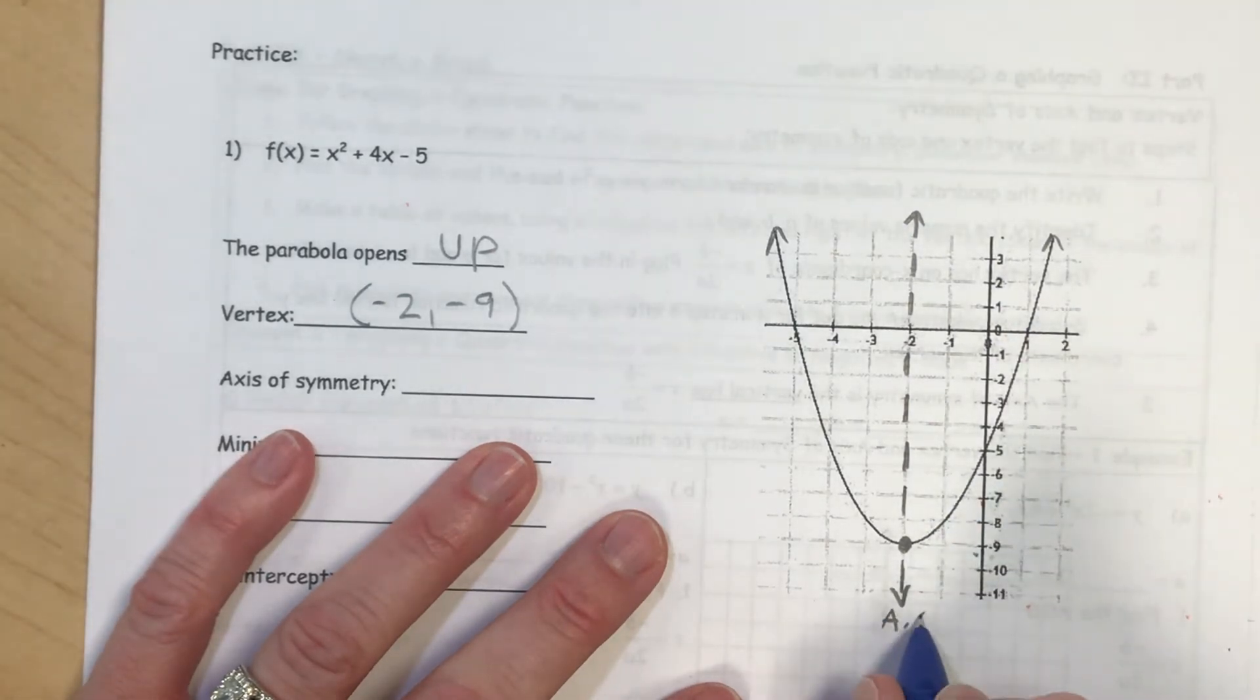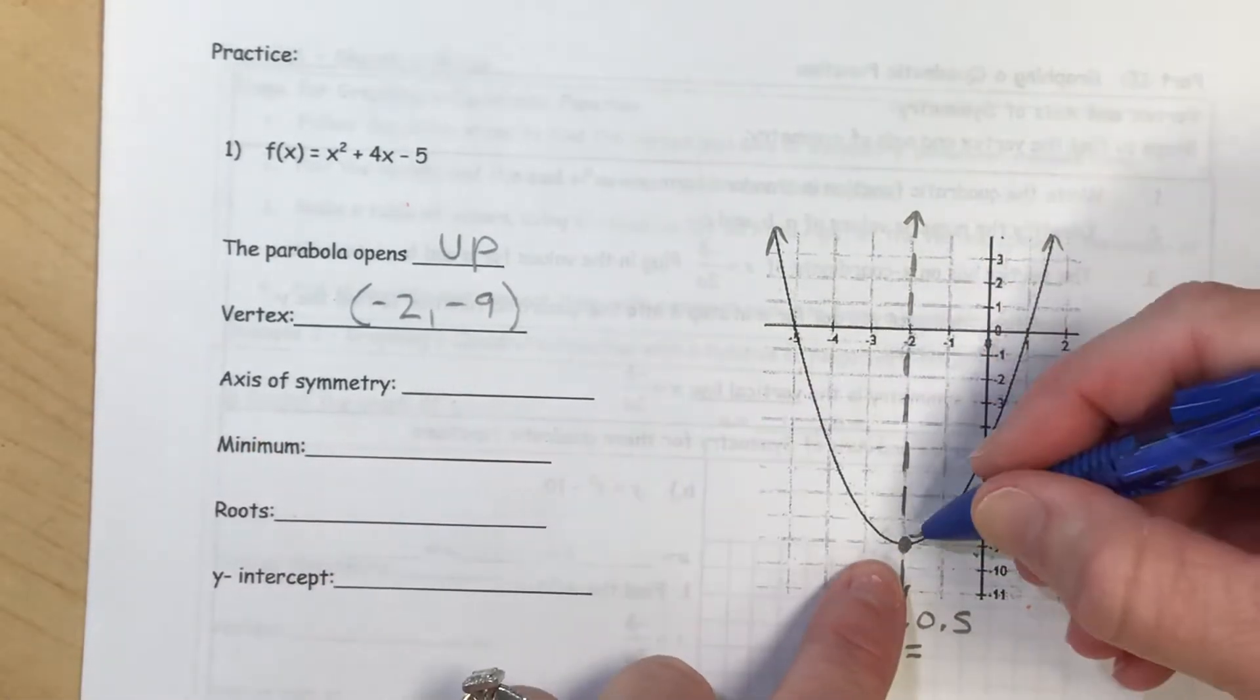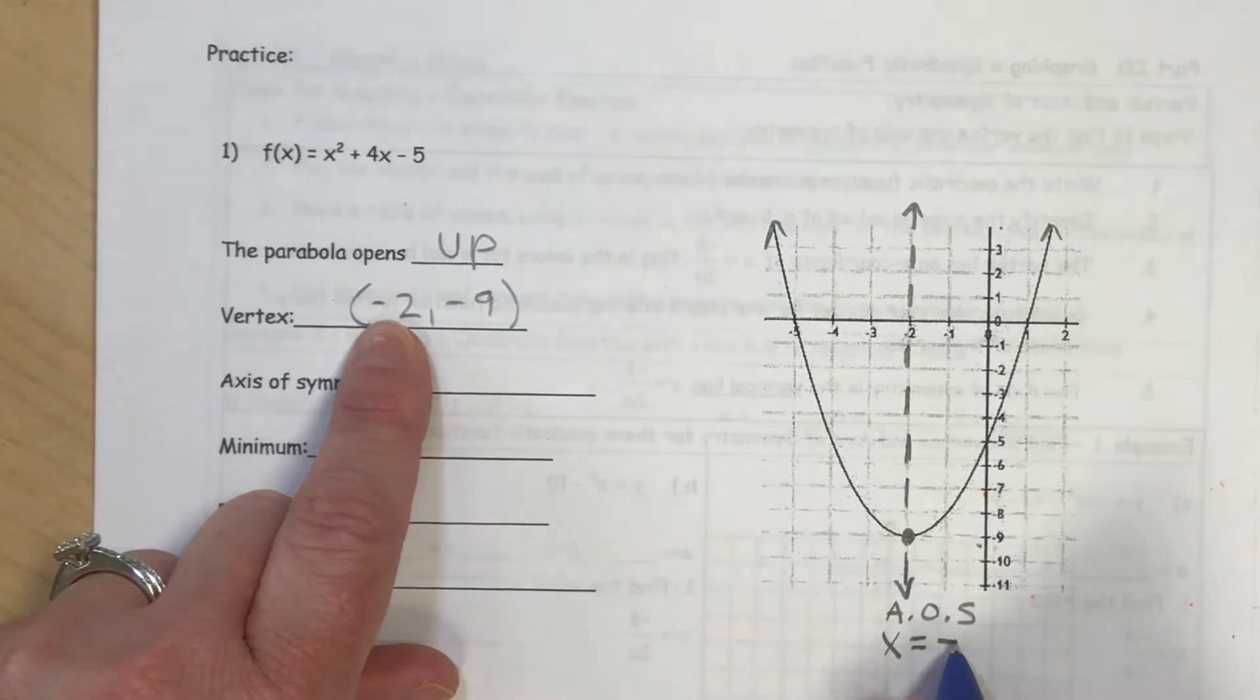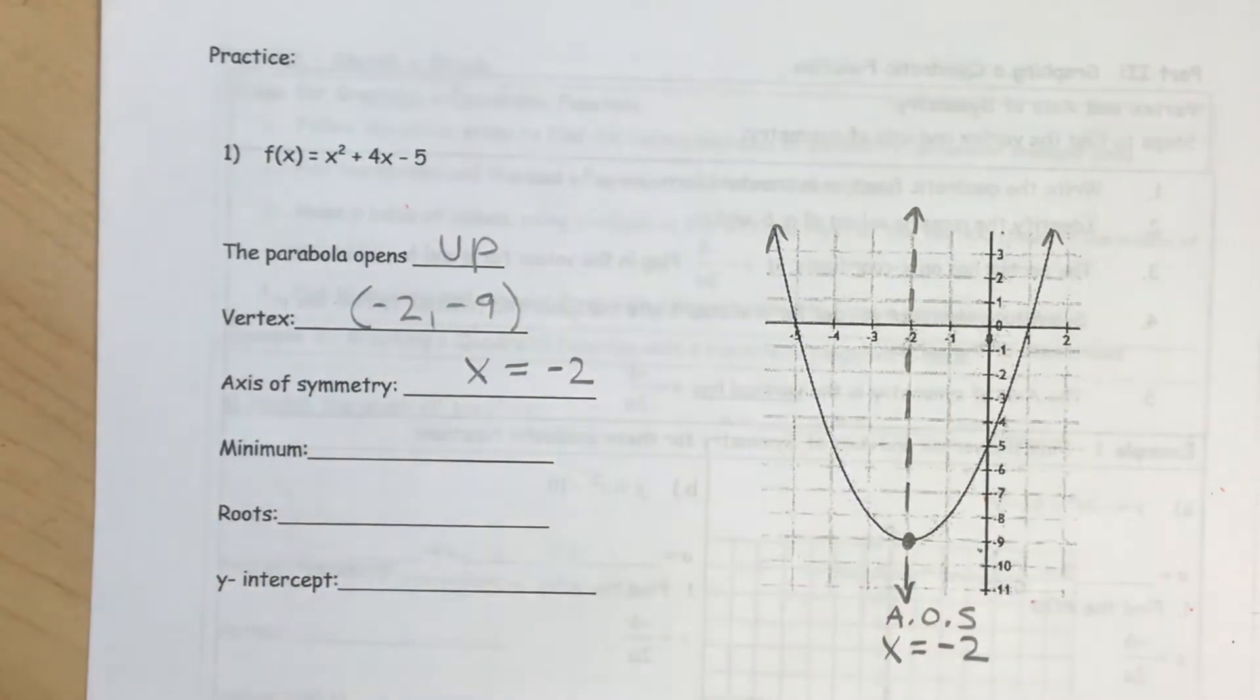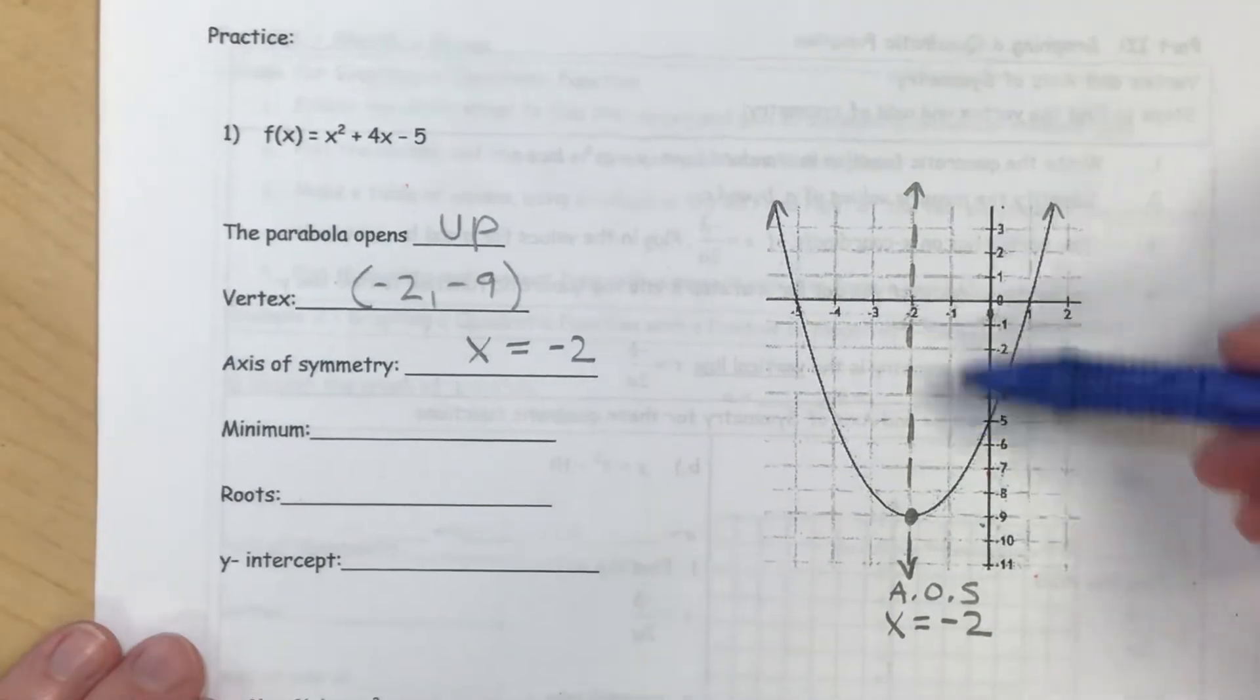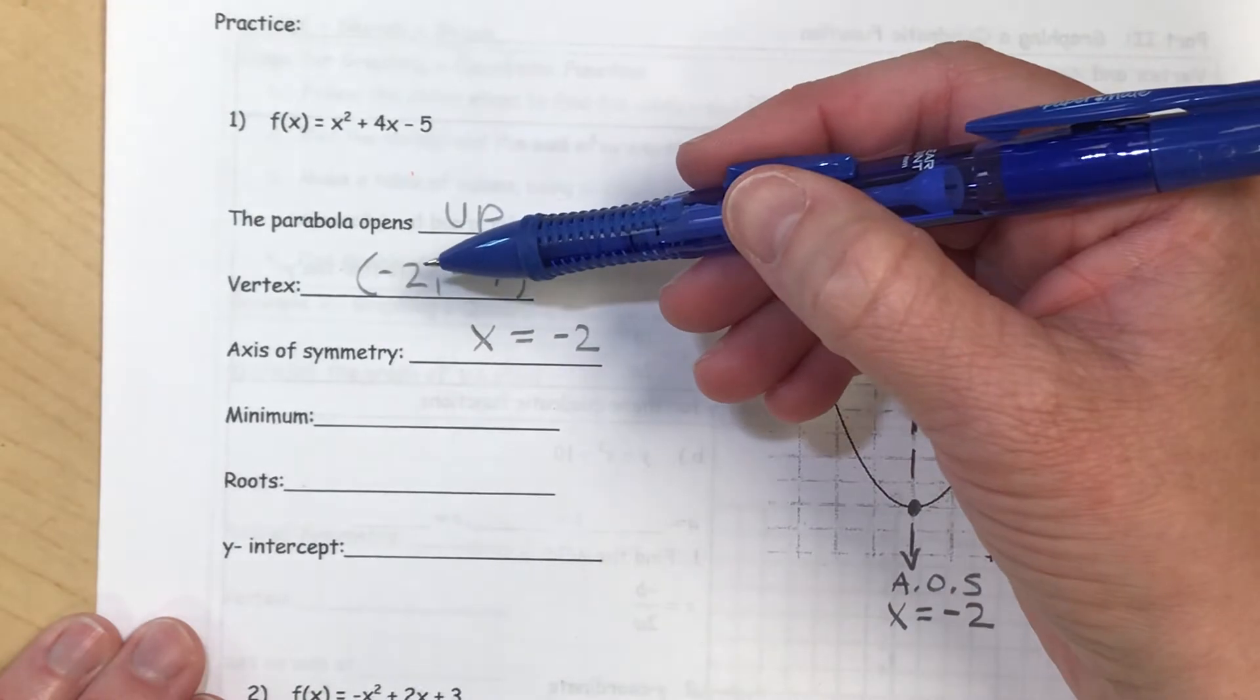And that's going to be this vertical line that will perfectly cut your parabola in half. So this axis of symmetry is a vertical line. So it's going to be x equal to a number. Notice how it will share the same x value as your vertex. So negative 2. So it's a line that goes exactly through that vertex. And because it's vertical, VUX, it should hit the x value of your vertex.